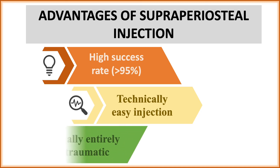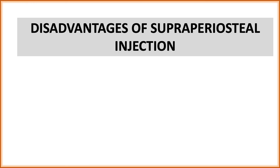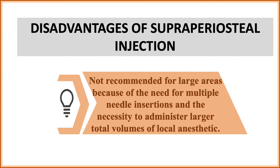You simply place the needle parallel to the tooth to be anesthetized — it is technically very easy and usually entirely atraumatic compared to palatal anesthesia or nerve blocks. The disadvantage is that supraperiosteal injection is not recommended for larger areas due to the need for multiple needle insertions and the necessity to administer a larger total volume of local anesthetic — in such cases, nerve blocks are preferred. Also, local infiltration mainly works in the maxilla because the bone is porous, allowing the local anesthetic to easily penetrate to the root apex.